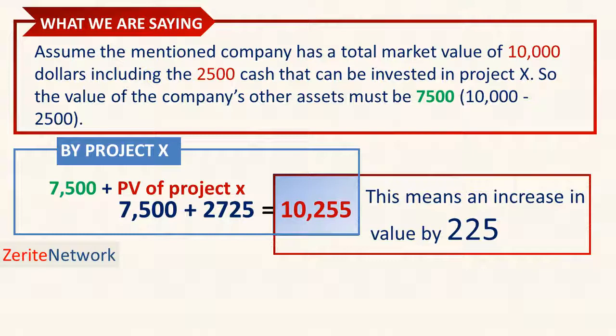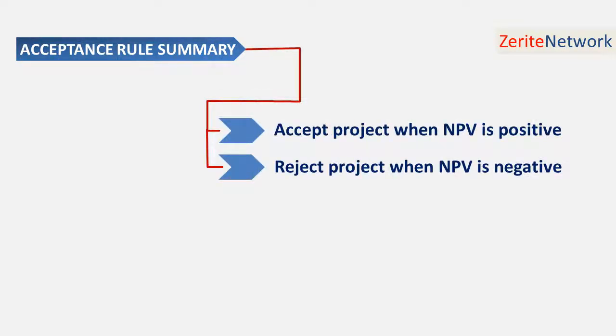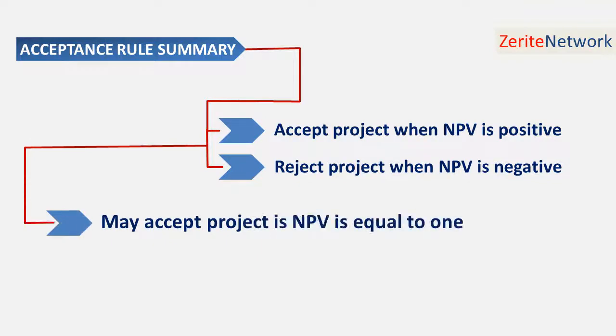The acceptance rule is simple: accept the project when the NPV is positive, reject the project when the NPV is negative, and we may or may not accept if NPV equals zero.